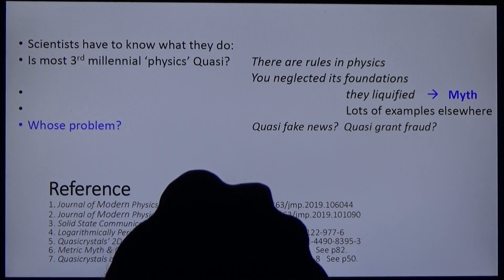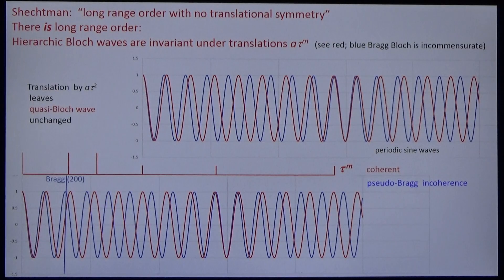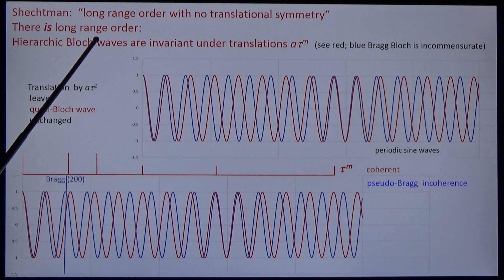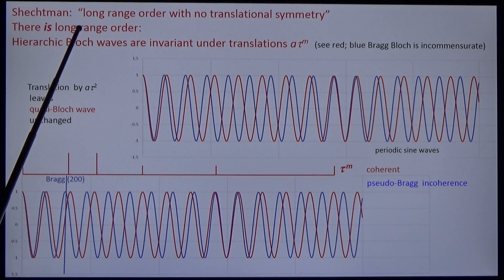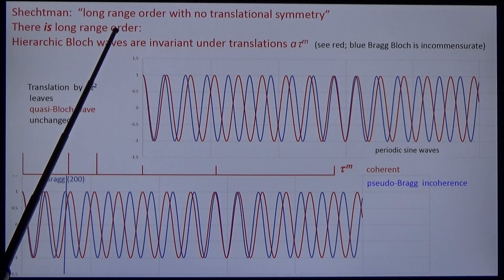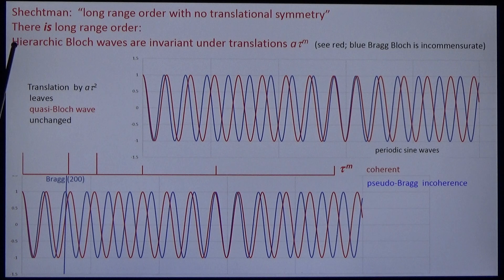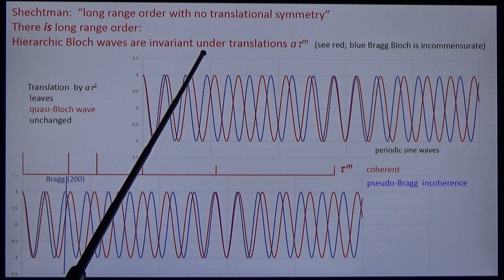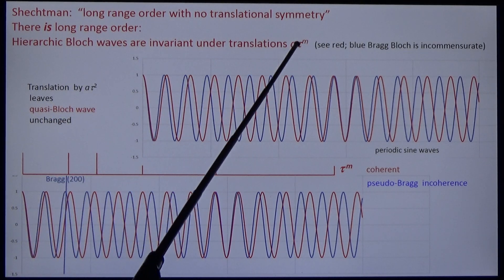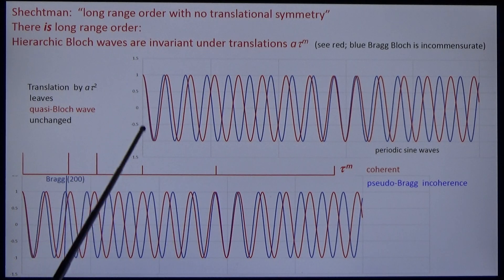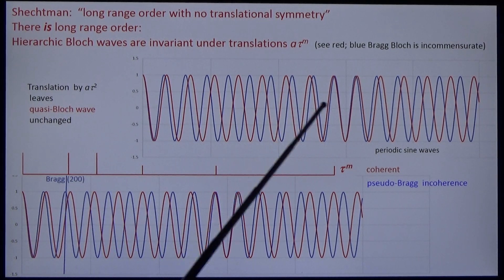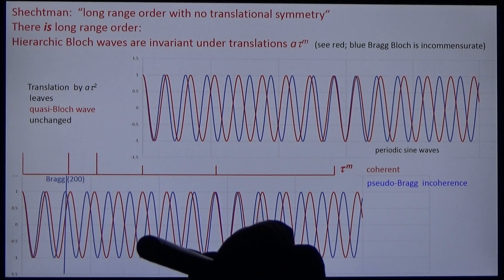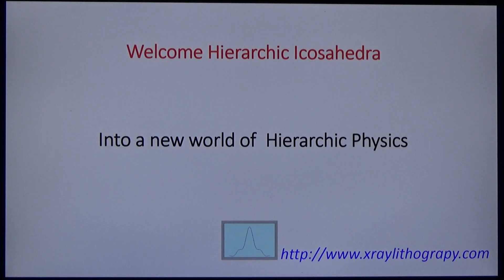But I'll give you now a souvenir. Is there long range order? Yes, of course. That's evident in the diffraction. And is there no translational symmetry? On the contrary. Hierarchic block waves are invariant under translations a·tau^n. Look at the red waves. The blue waves are incoherent. And welcome hierarchic icosahedra into a new world of physics.